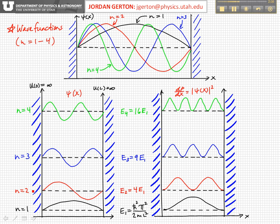If we square the n equals 2 state, we get two probability humps, so the particle is most likely to be found here and here, and it's not at all possible to find the particle actually in the center of the box.